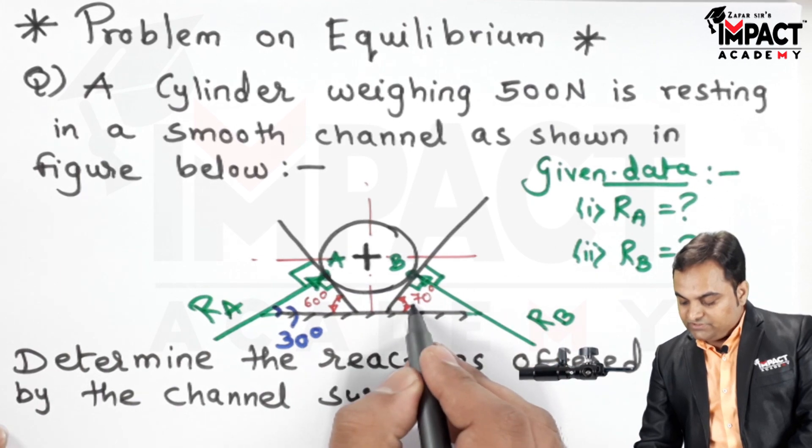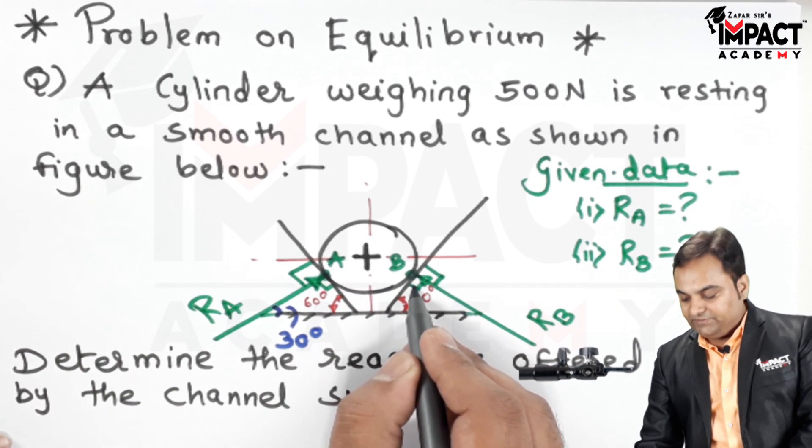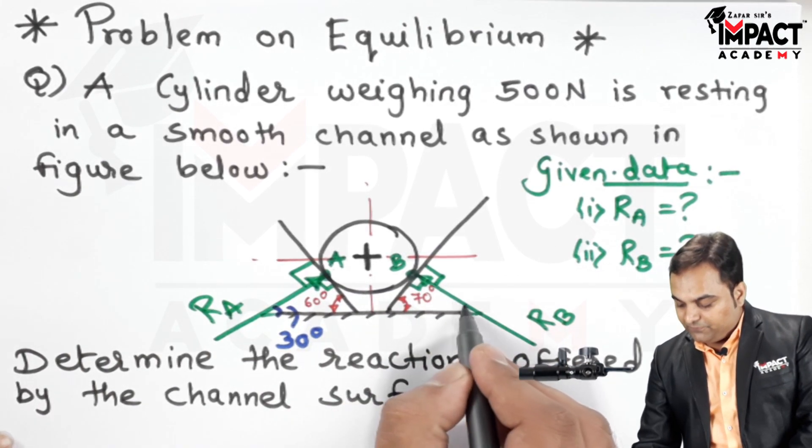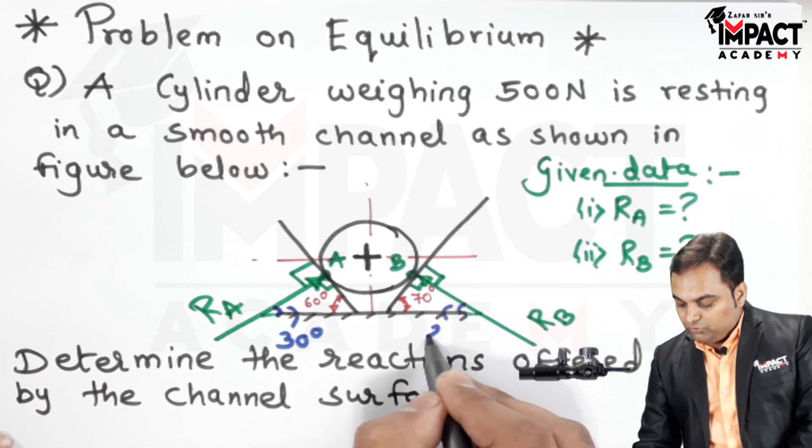And then here this is 70 and this angle is 90 degree, so the angle made by RB with respect to horizontal is 20 degree.